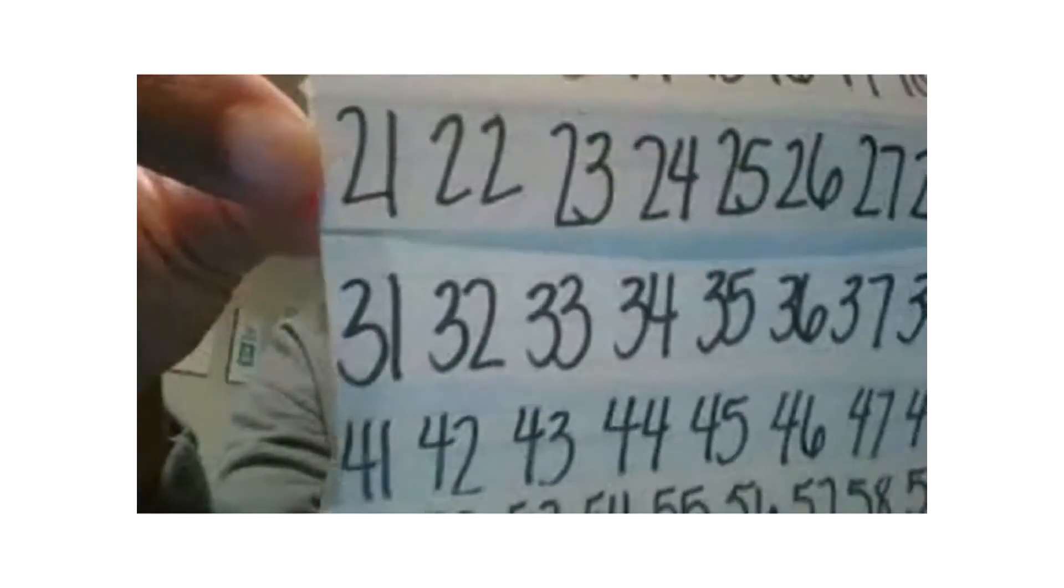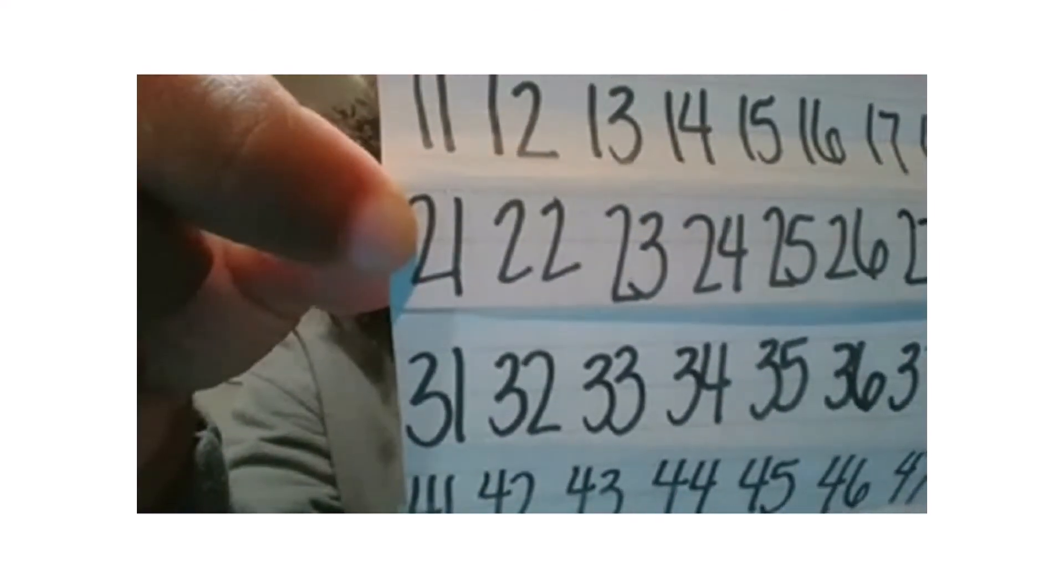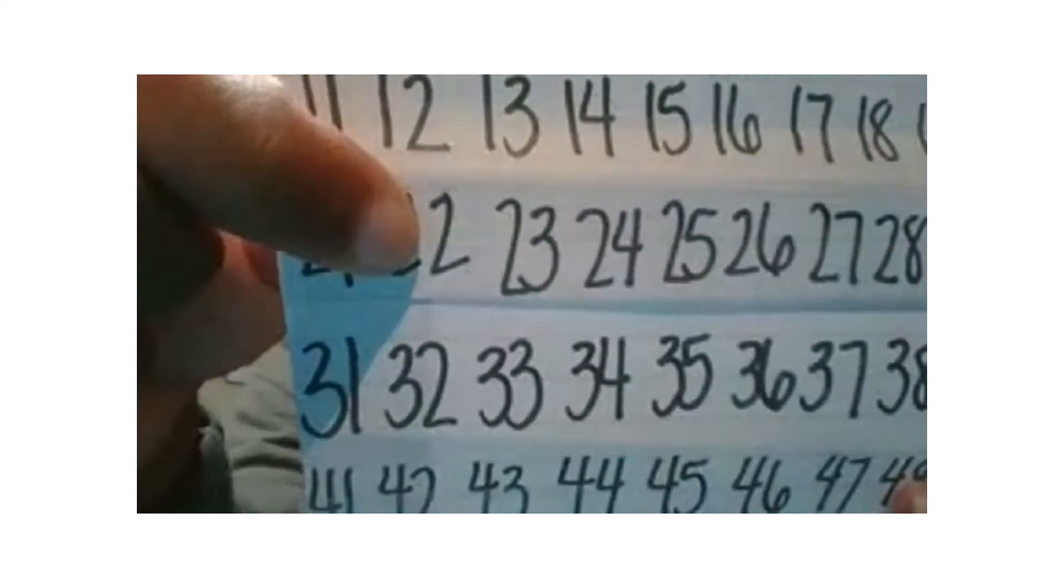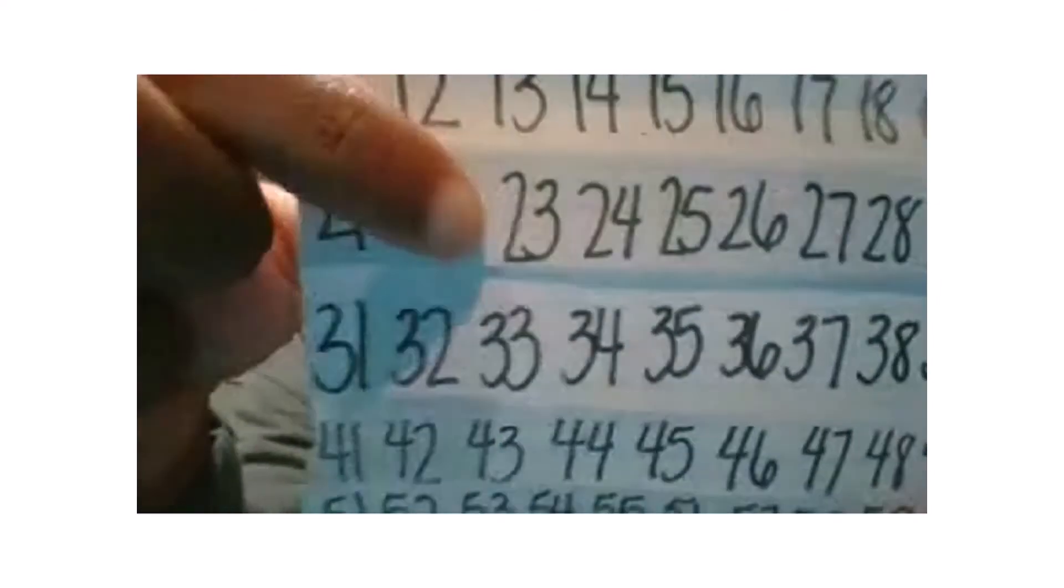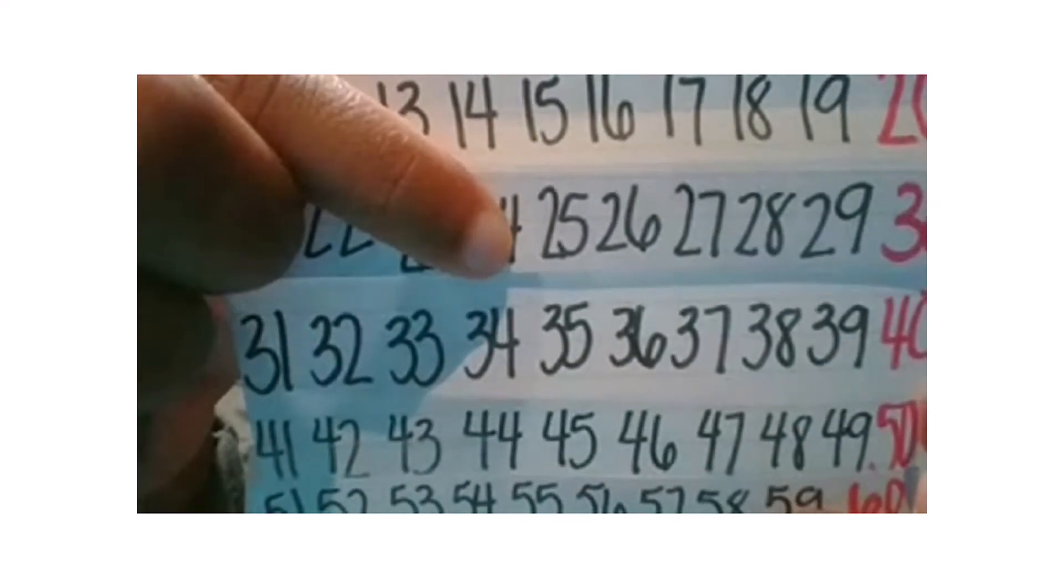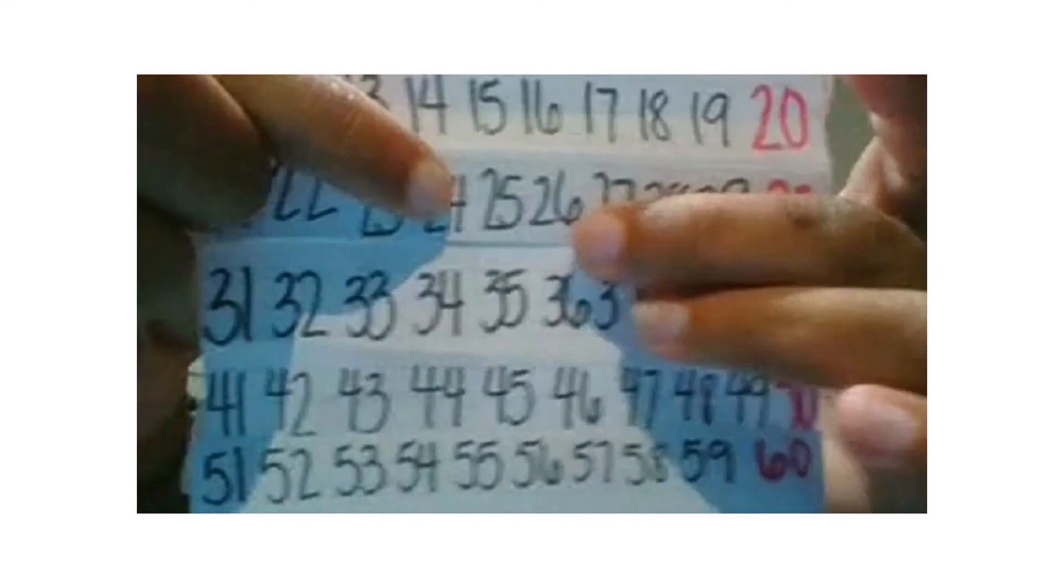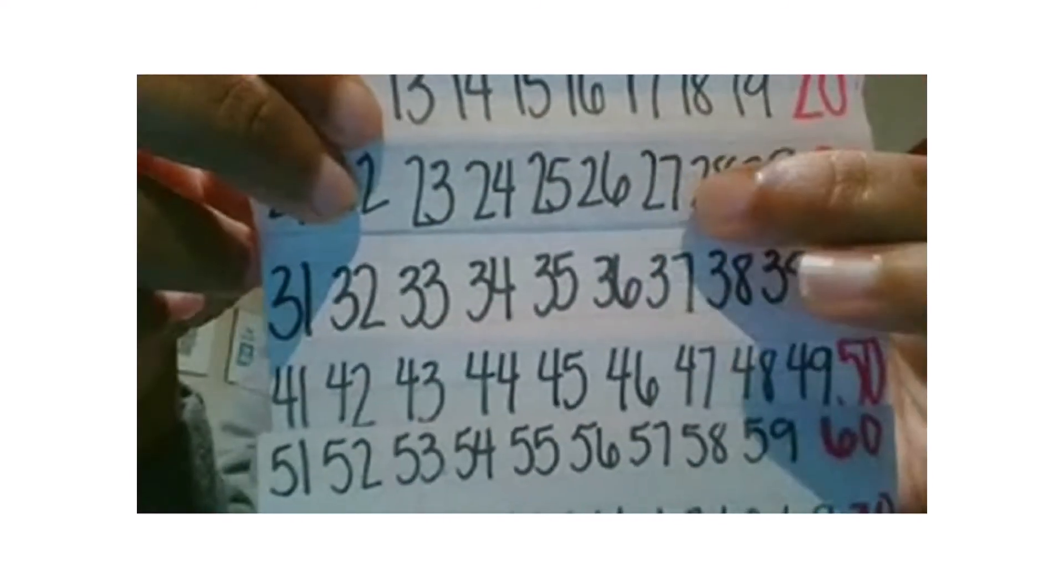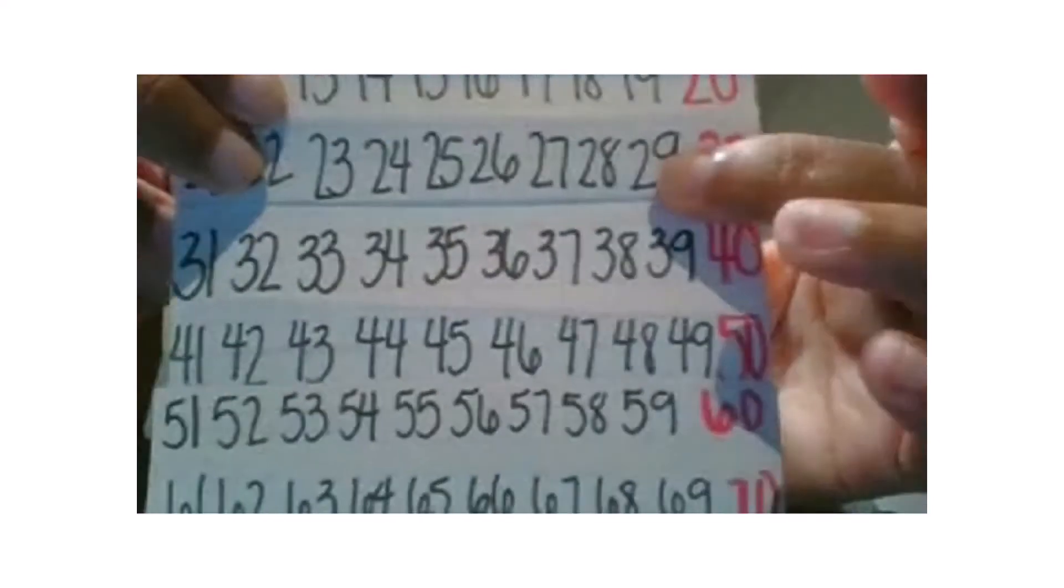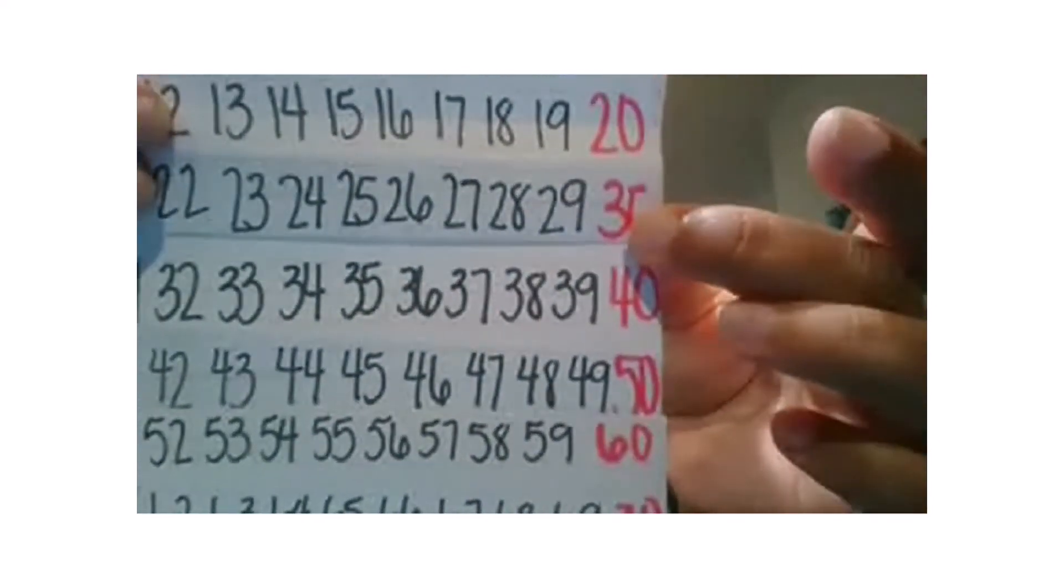So if I go to 21, 21 is two tens one. Let's count on. Two tens two, two tens three, two tens four, two tens five, two tens six, two tens seven, two tens eight, two tens nine, three tens. Great job.